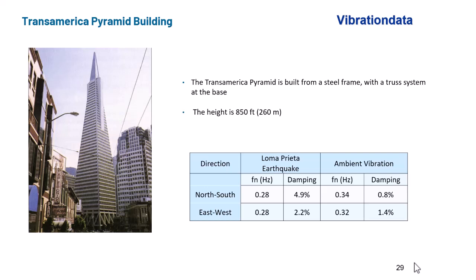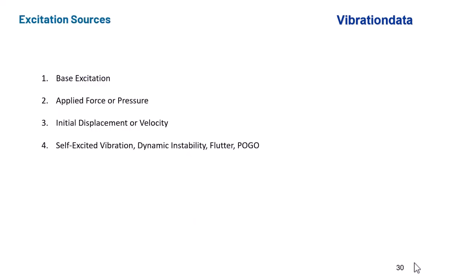What about just the ambient vibration from the wind? You can probably include the traffic as well. So the natural frequencies tend to be a little bit higher, north-south 0.34 hertz and east-west 0.32 hertz. A little bit of a higher increase in natural frequency during the ambient vibration. And then the damping was much lower in the north-south direction, 0.8 percent damping during the ambient. And in the east-west, 1.4 percent damping. So some interesting nonlinearities going on with that building.